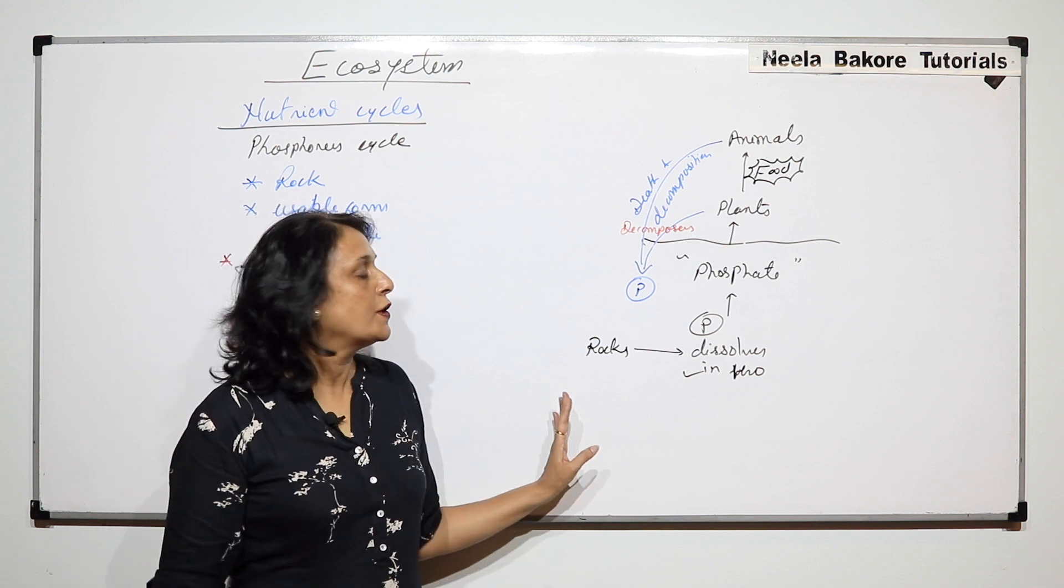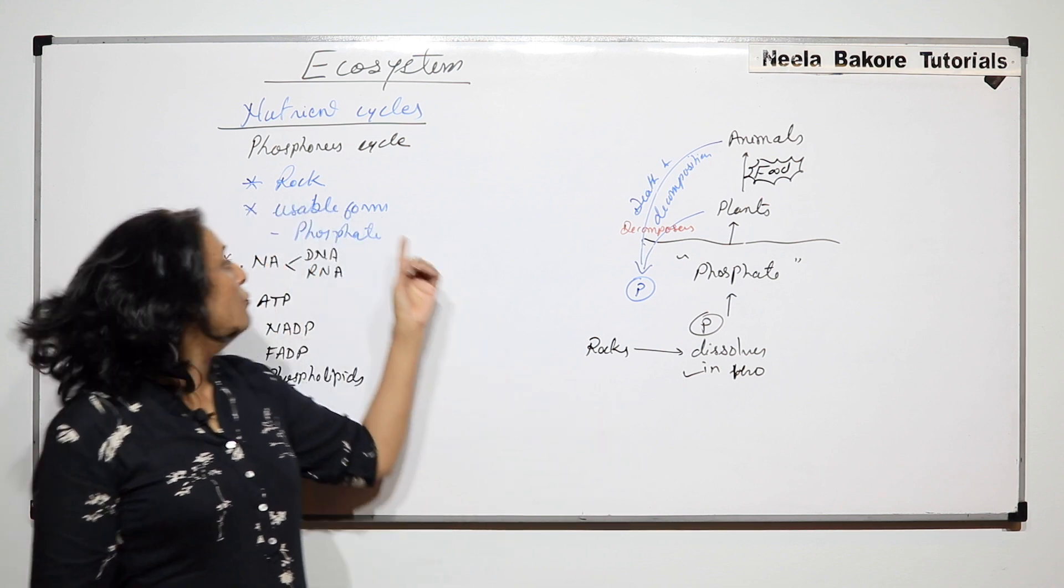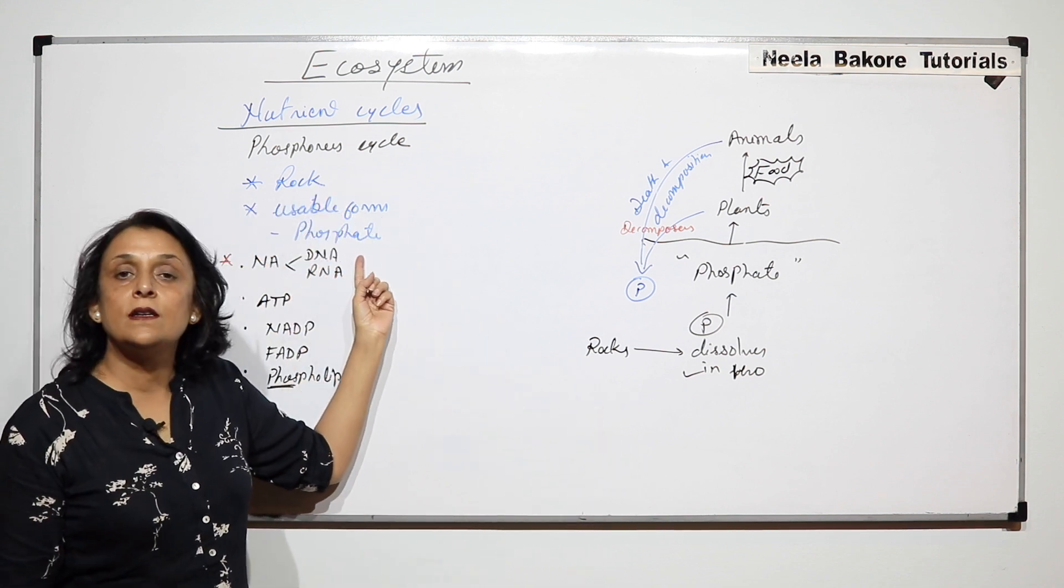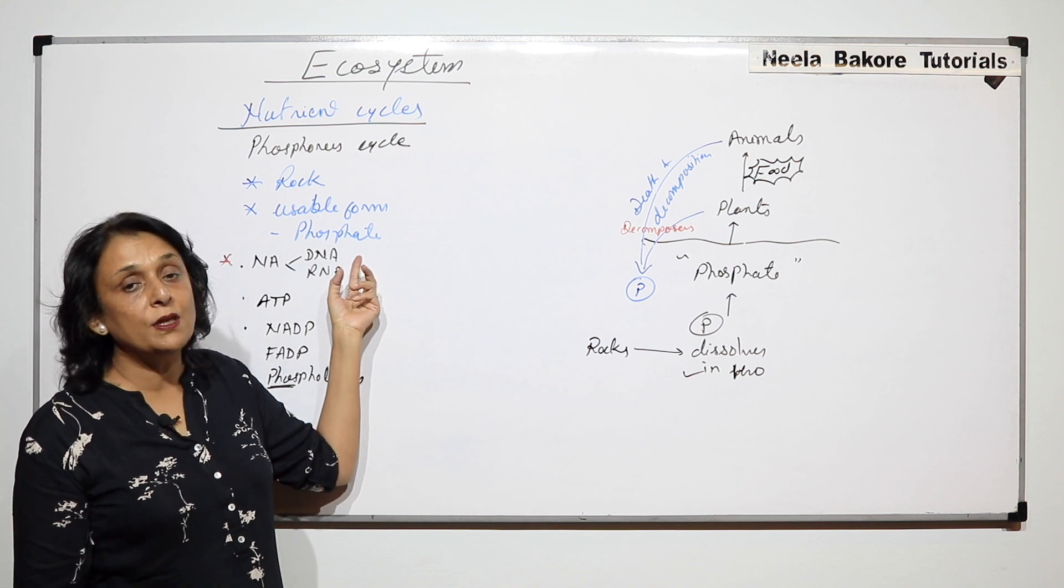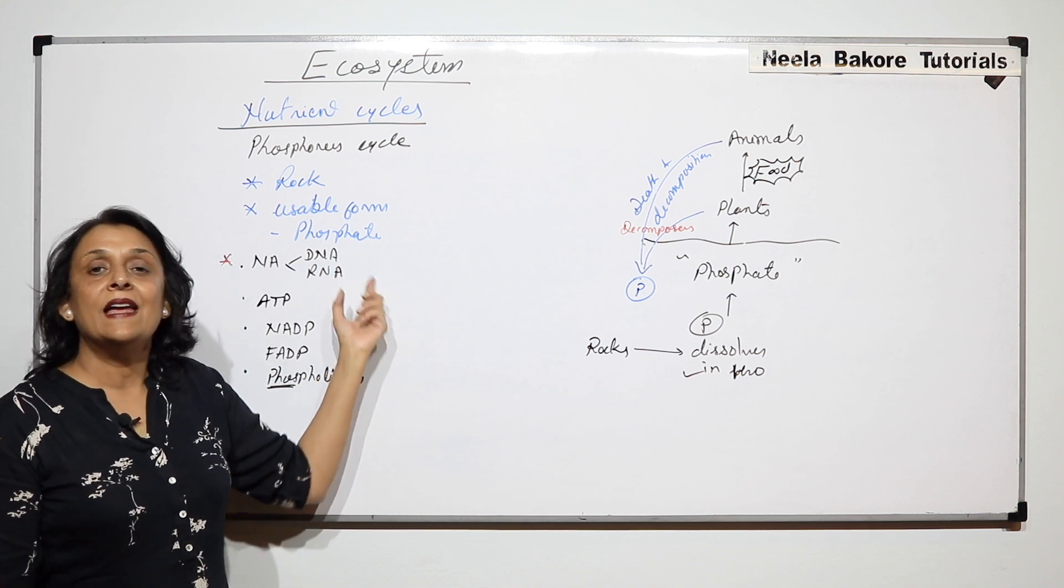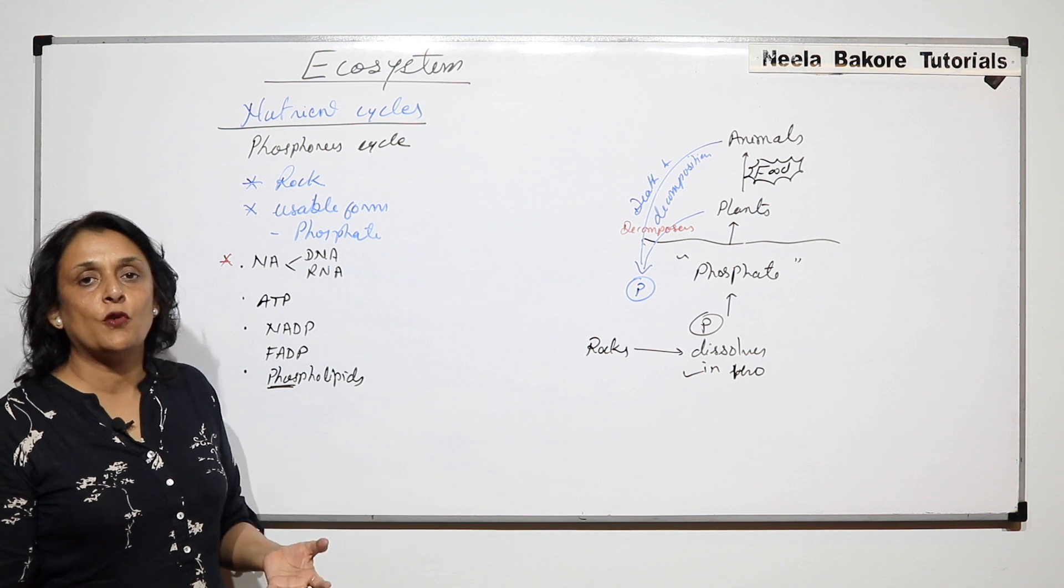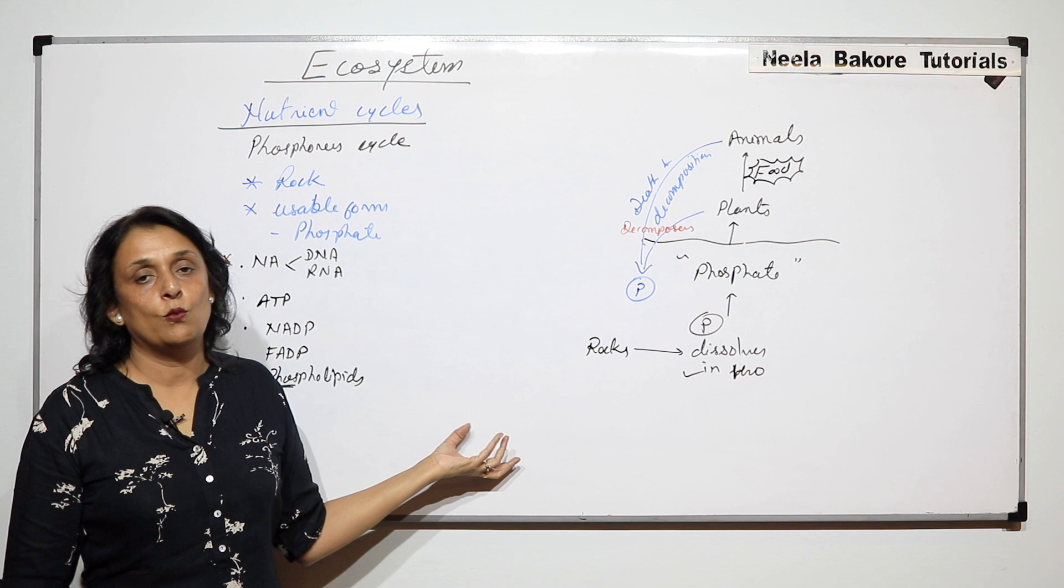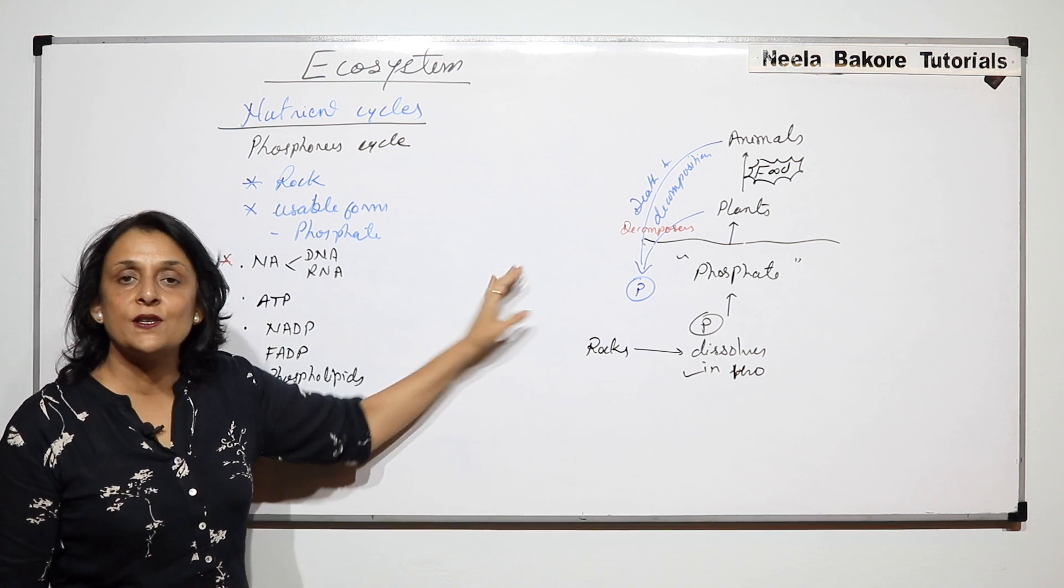Things we have to remember in phosphate cycle are: What is the main source? It is in the rocks. In which form is it available? Phosphate. Where do living organisms need this phosphate and how is this phosphorus moving in the living world? This is a very simple cycle.